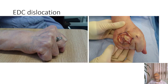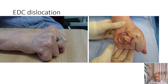EDC dislocation is another fairly common problem. This is due to the sagittal band tearing, especially on the radial side, and the resulting forces pulling the EDC towards the ulnar gutter. Once it goes below the axis of the joint, repeated attempts at extension do not produce extension but rather flexion of the MP joint, because the axis of pull has fallen below the axis of the metacarpophalangeal joint.